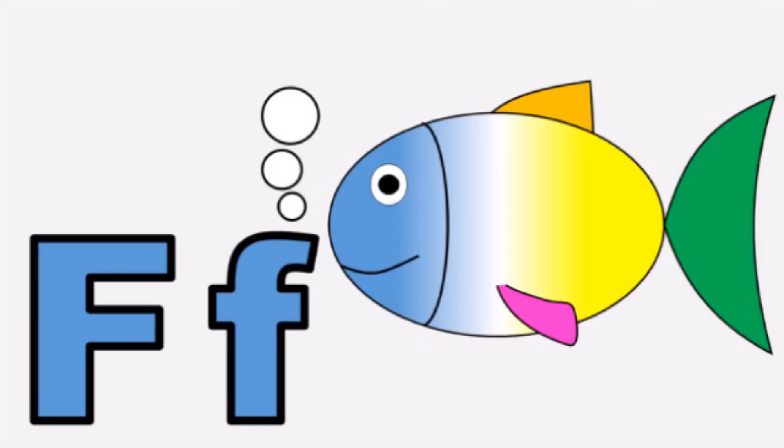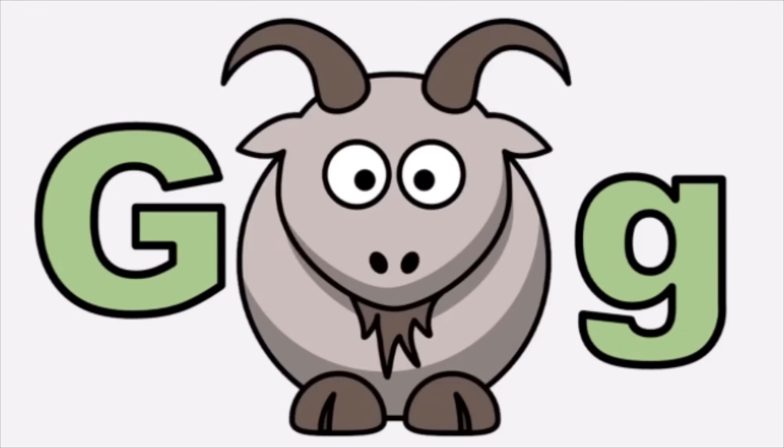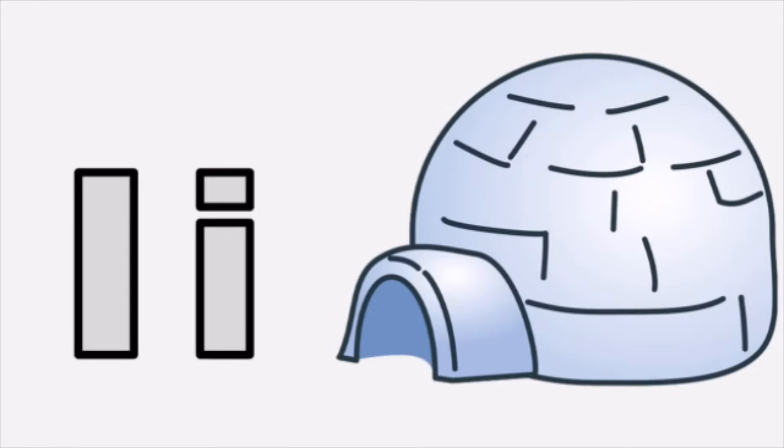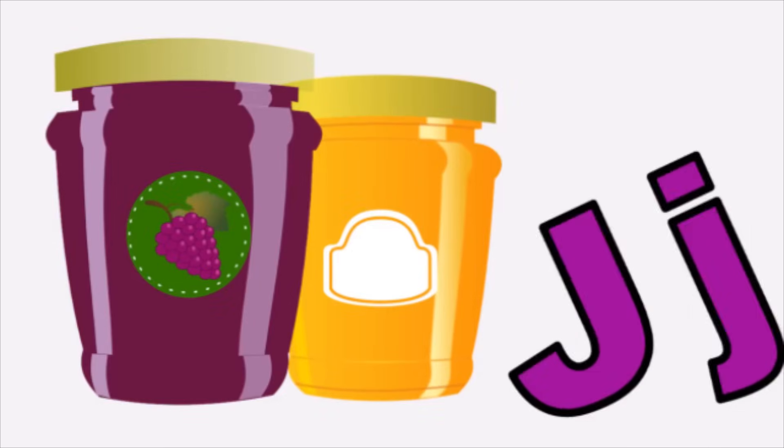F for Fish, f, fish. G for Goat, g, goat. H for Hat, h, hat. I for Igloo, e, igloo. J for Jam, j, jam.